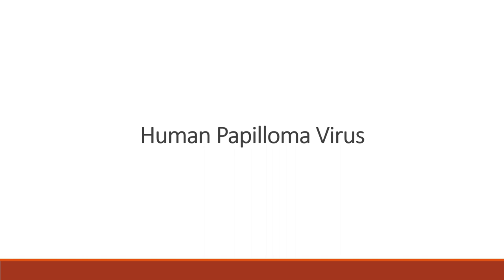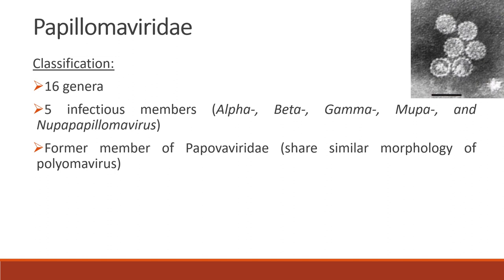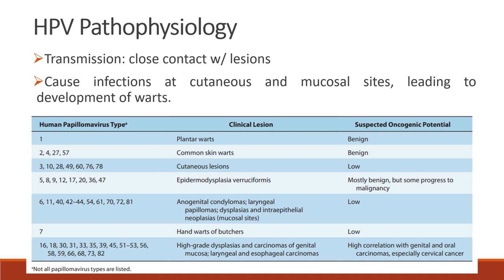First, we will start with the human papillomavirus. Papillomaviridae, or the human papillomavirus, has 16 genera. It also has five infectious members, which are the alpha, beta, gamma, mu, and nu papillomavirus. This is also a former member of the Papovaviridae because it shares similar morphology of the polyomavirus.